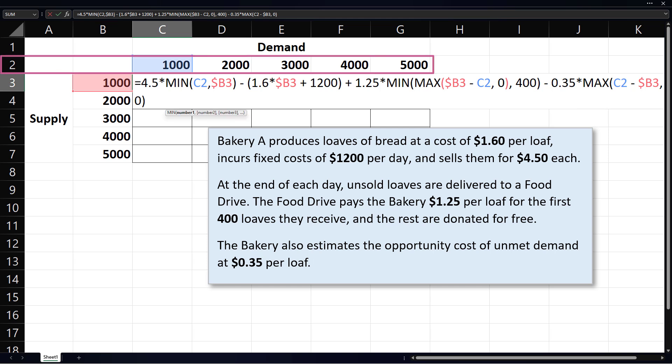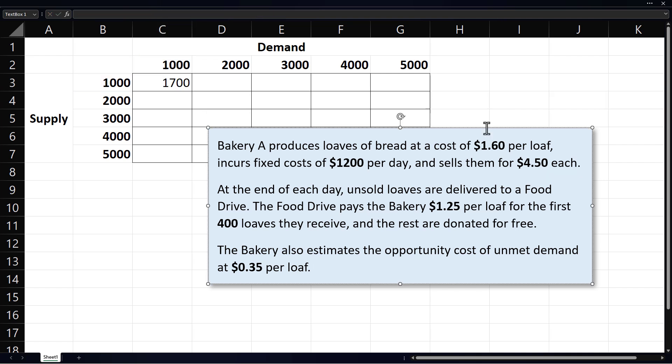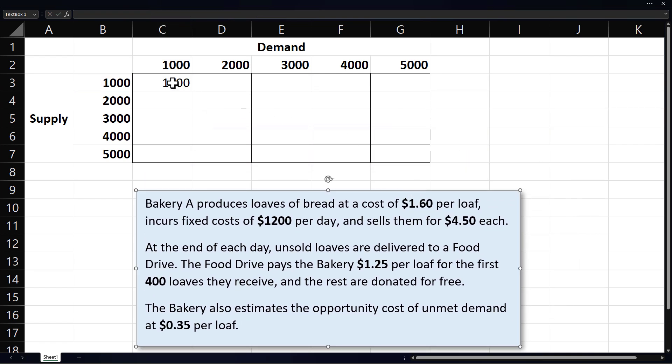Similarly, all demand values are in row 2. Therefore, we make row 2 absolute by placing a dollar sign before 2 in every appearance of C2 in the formula. I can now grab the fill handle and drag the formula to other cells in the table.